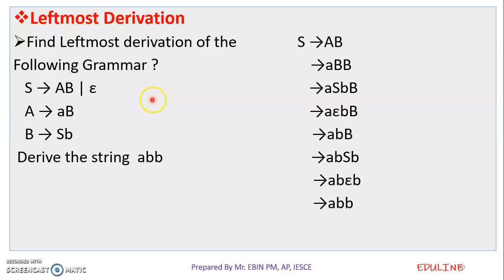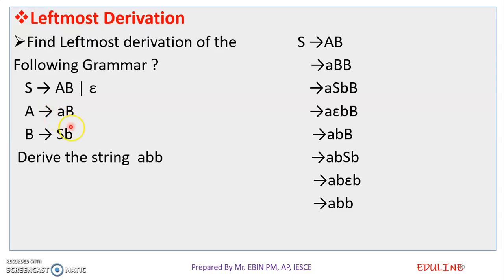We use the leftmost derivation. We use the grammar. S tends to a, b or epsilon. That means S tends to a, b or epsilon. Then we use the string a, b, b. Now, this is the grammar. We use the production rules.